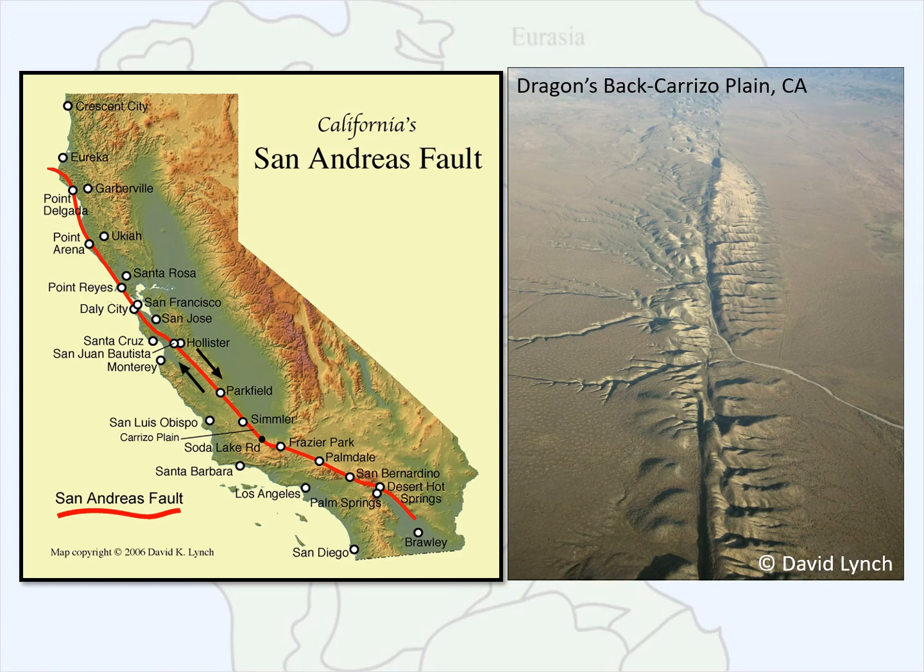One of the most well-known strike slip faults is the San Andreas fault, which represents the transform boundary between the Pacific plate and the North American plate. On this slide we have a map of the San Andreas fault, which is a right lateral fault, and a flyover image of the Carrizo Plain in California, which shows the sectioned-off portions of a mountain ridge that have been moved by the San Andreas fault.